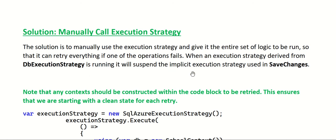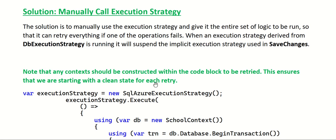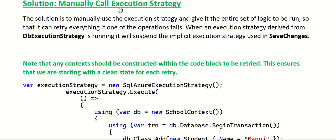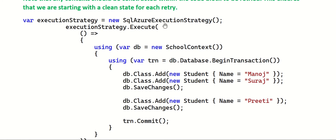When an execution strategy derived from DbExecutionStrategy is running, it will suspend the implicit execution strategy used in SaveChanges. Mark this — by default the implicit execution strategy will be suspended. Also importantly, any context should be constructed within the code block to be retried — this ensures we are starting with a clean state for each retry. Here I'm constructing a new execution strategy: ExecutionStrategy = new SqlAzureExecutionStrategy.